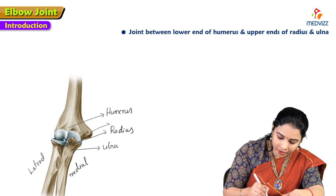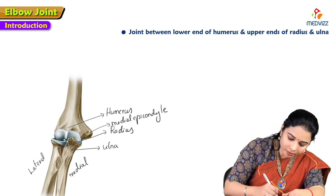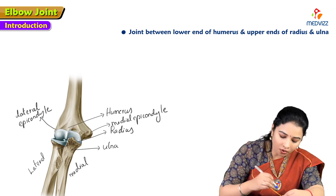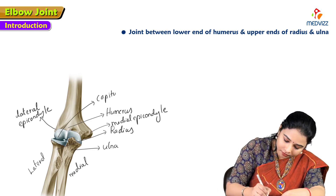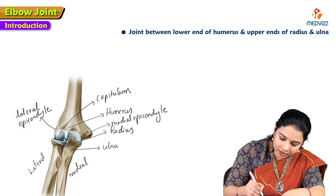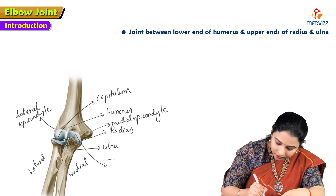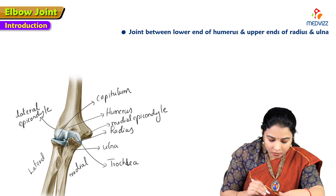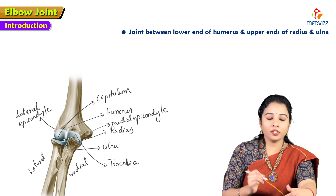The medial projection is the medial epicondyle and the lateral projection is the lateral epicondyle. The articulating parts are the trochlea and the capitulum. The capitulum articulates with the head of the radius, and the trochlea articulates with the trochlear notch of the ulna.